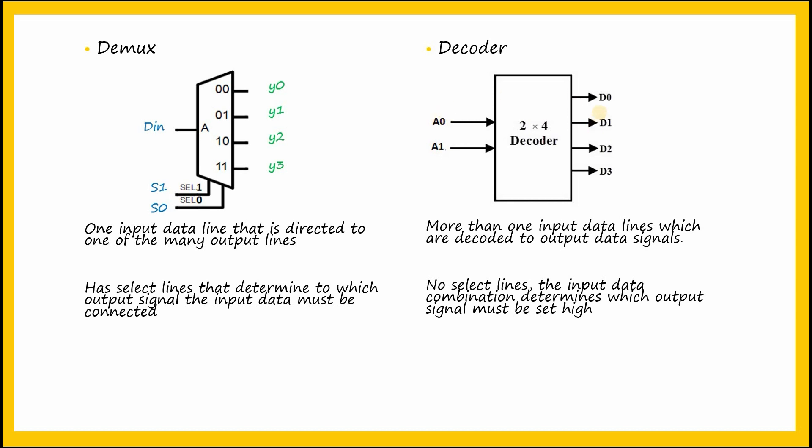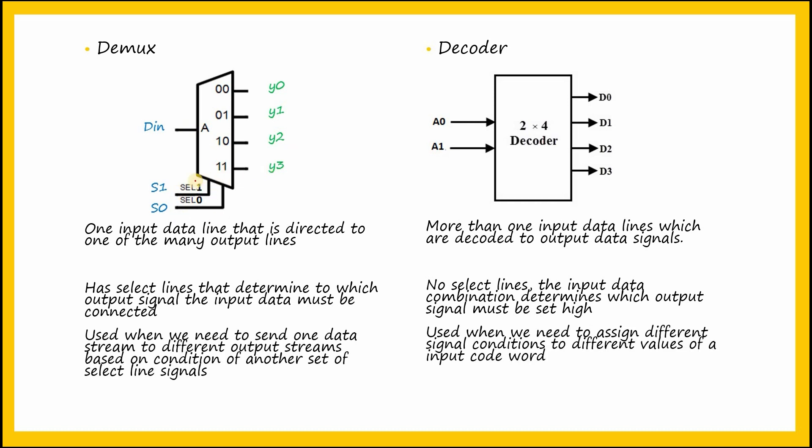So, decoder does not need a select line, while a demultiplexer needs select lines. A demultiplexer is used when we need to send one data stream to different output streams based on the condition of select lines.